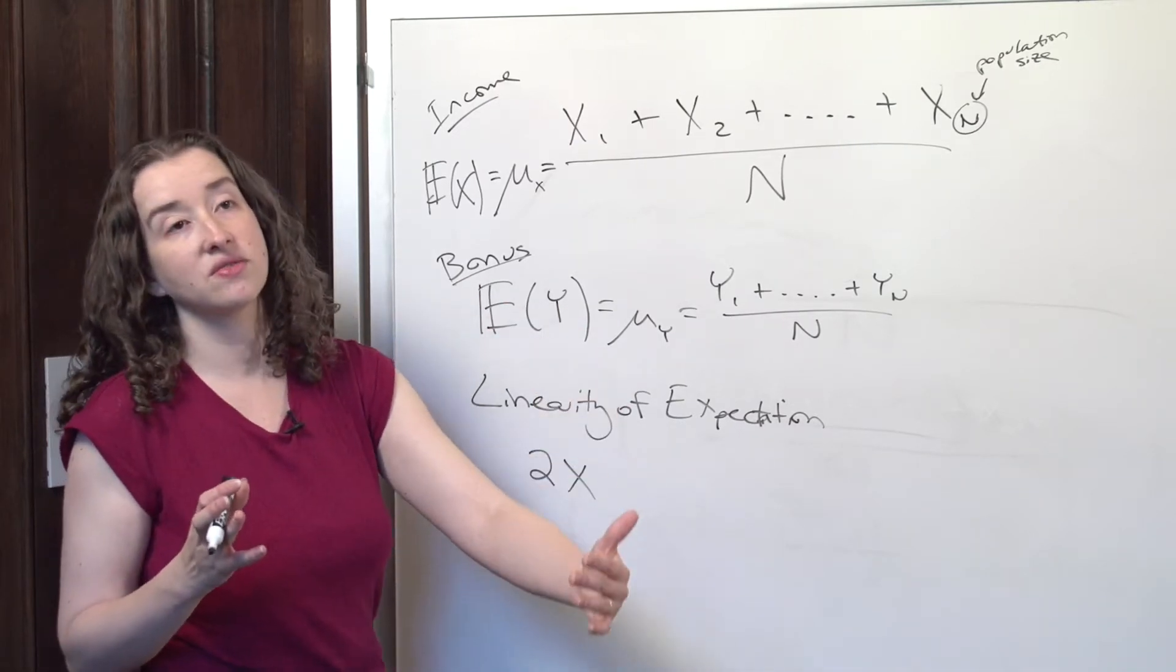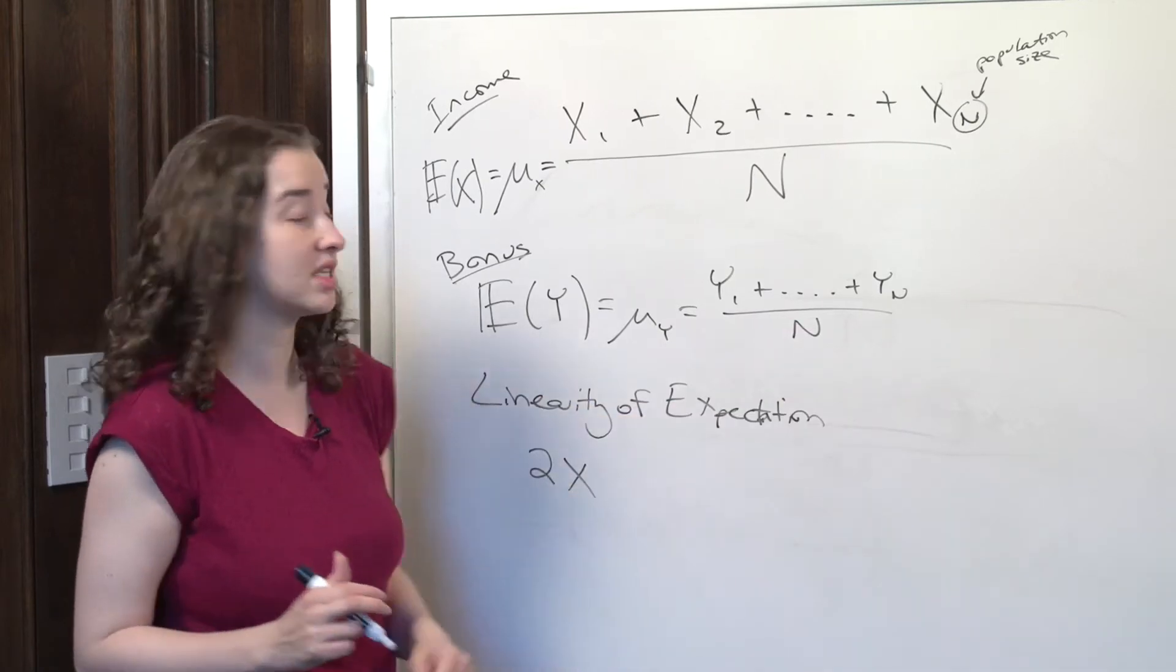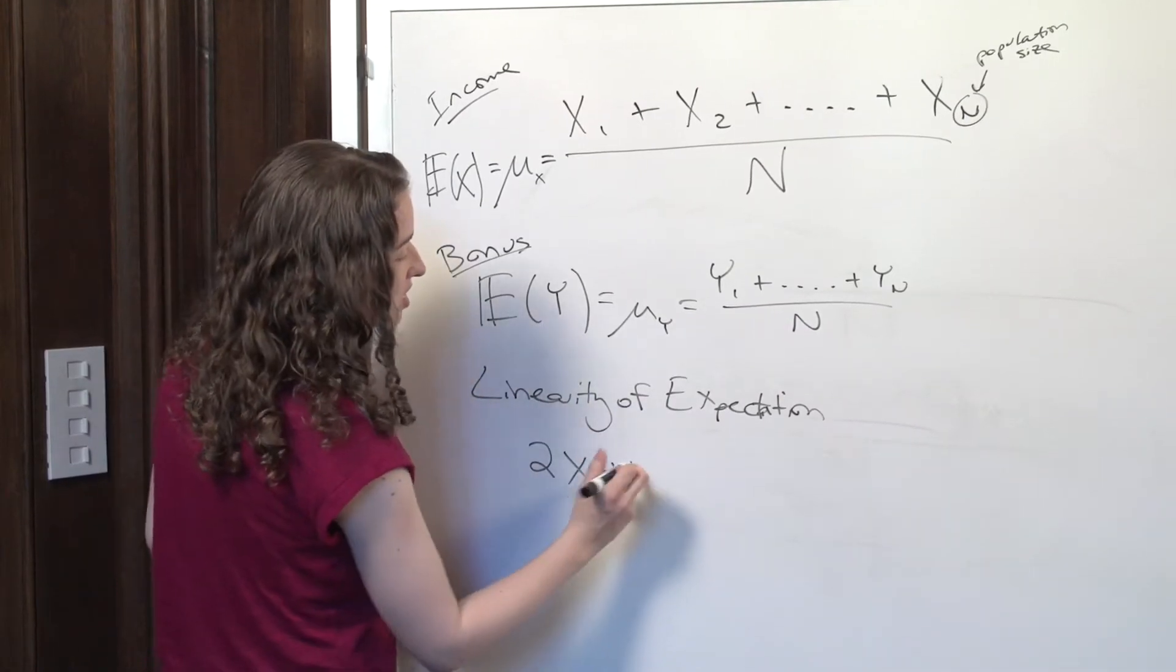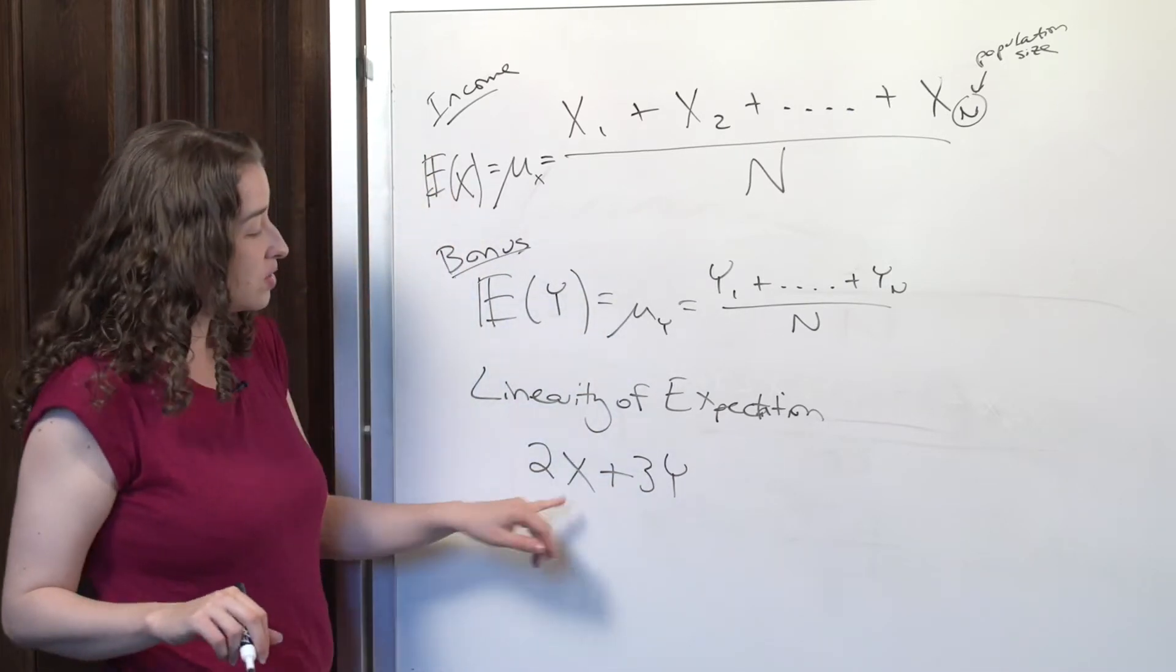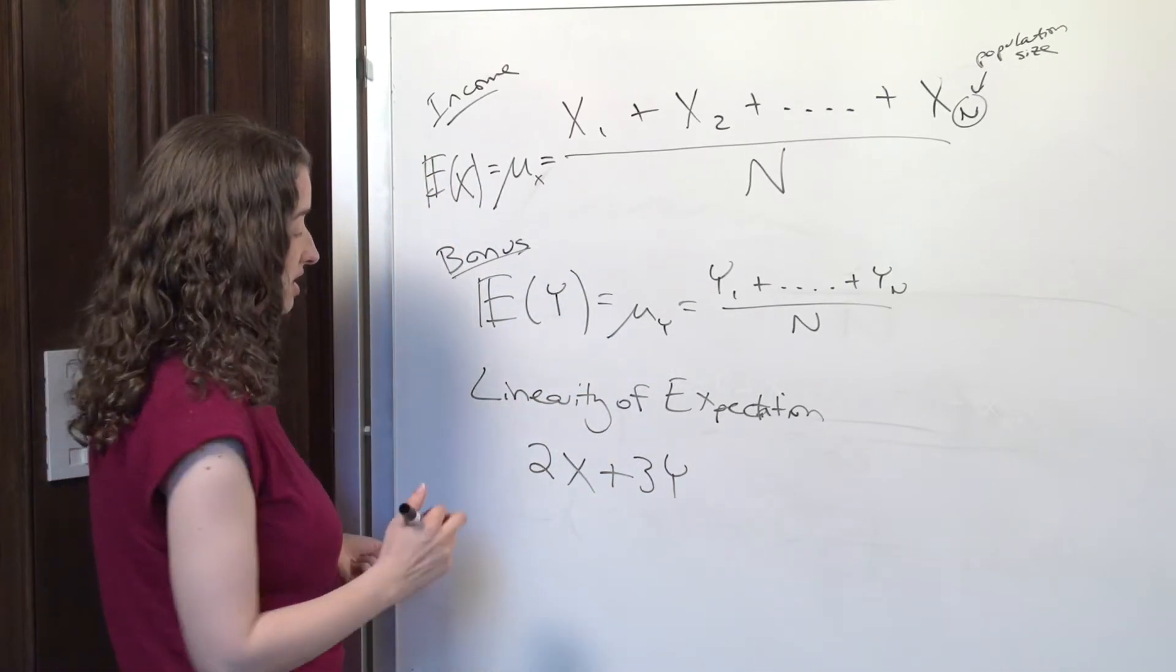There was income for 2015, and then a bonus, income for 2016, and then a bonus, then we stopped. In other words, suppose we're interested in two times someone's income plus three times how much they seem to be receiving as a bonus.